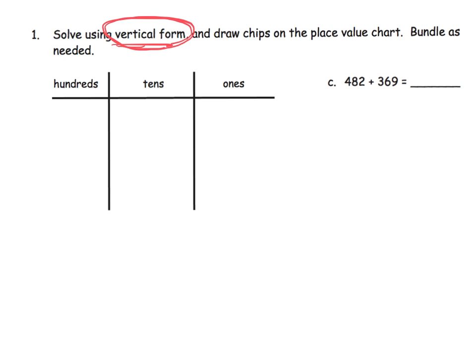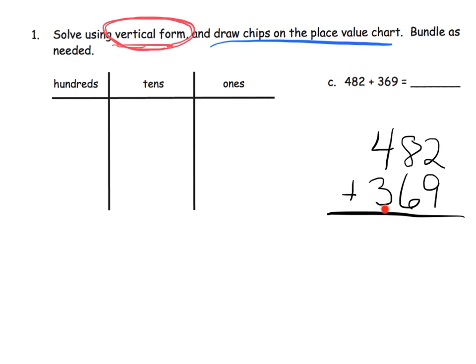So I'll write 482 plus 369 right here. But they want us to use the place value chart. Now, it doesn't say to do the vertical method first and then do the place value chart, or to do the place value chart then the vertical form. So teachers and parents, let your students decide which one they want to do first, and then they use the other one to confirm their answer.